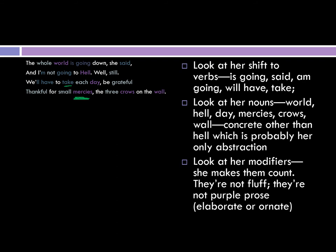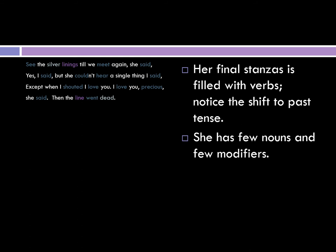In the final stanza it is loaded with verbs and has shifted to the past tense. She has very few nouns and very few modifiers. So there's this build-up of nouns, nouns, nouns, and then a build-up of verbs and a lessening of nouns, which has a really interesting impact on this poem — just the grammatical structure of it.